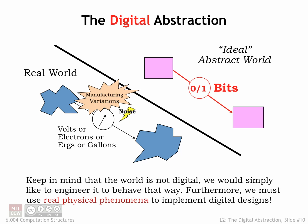To solve our engineering problem, we will introduce what we'll call the digital abstraction. The key insight is to use the continuous world of voltages to represent some small, finite set of values — in our case the two binary values 0 and 1. Keep in mind that the world is not inherently digital; we would simply like to engineer it to behave that way, using continuous physical phenomenon to implement digital designs.